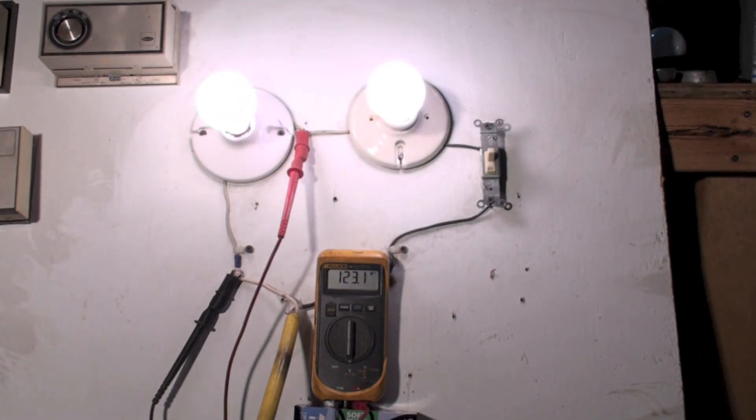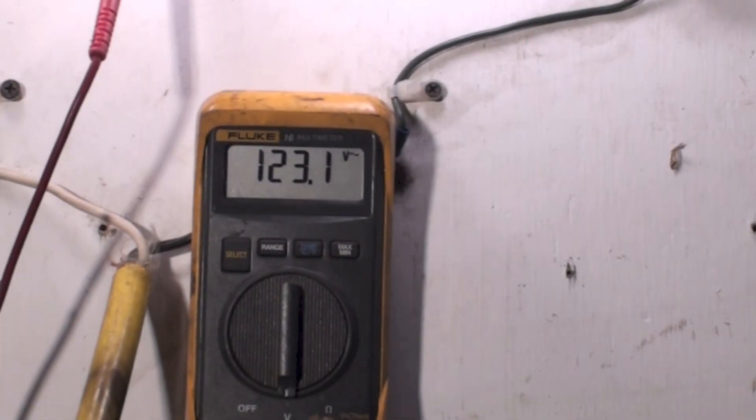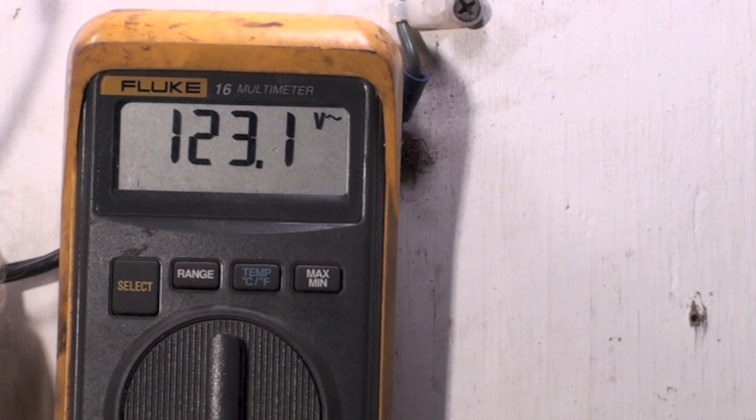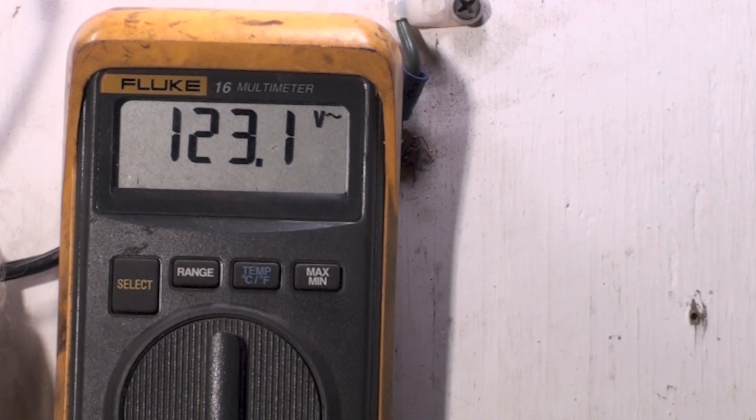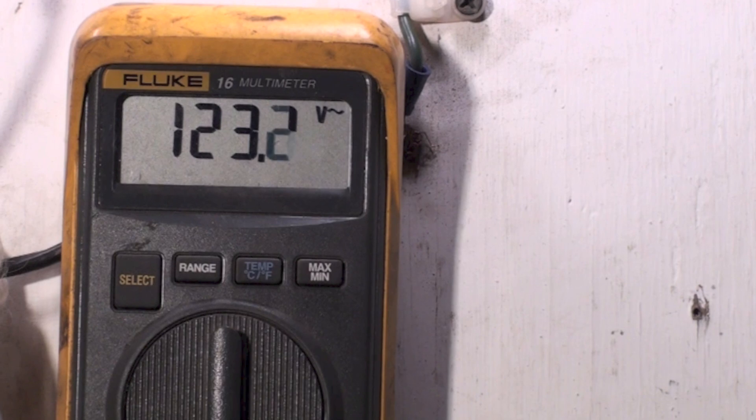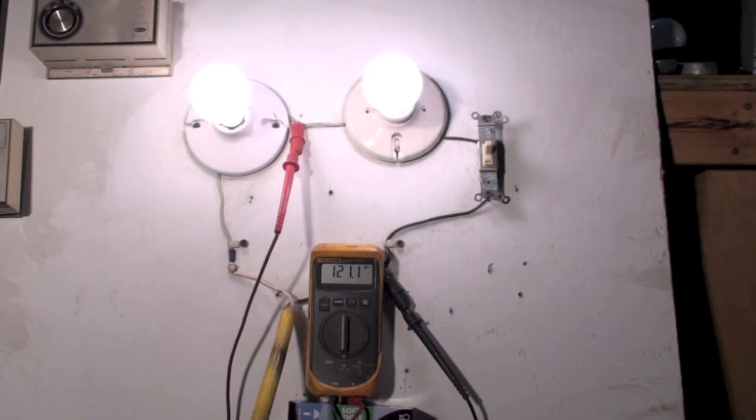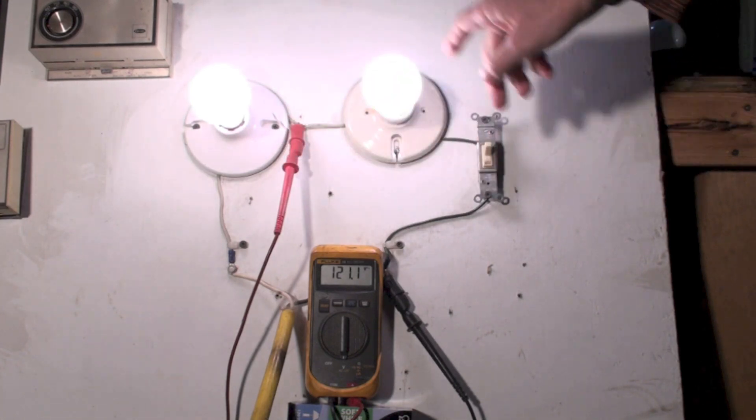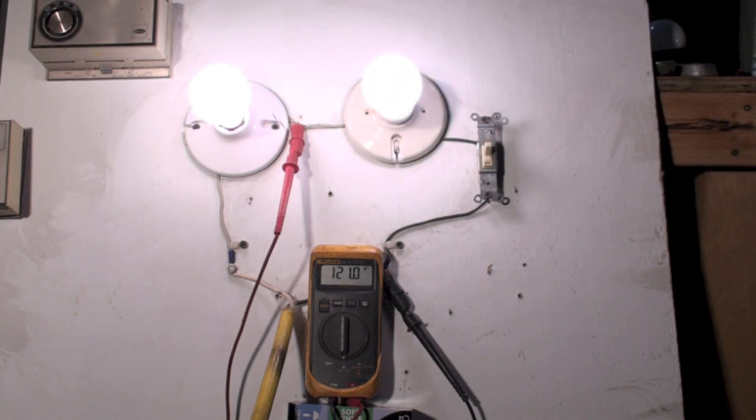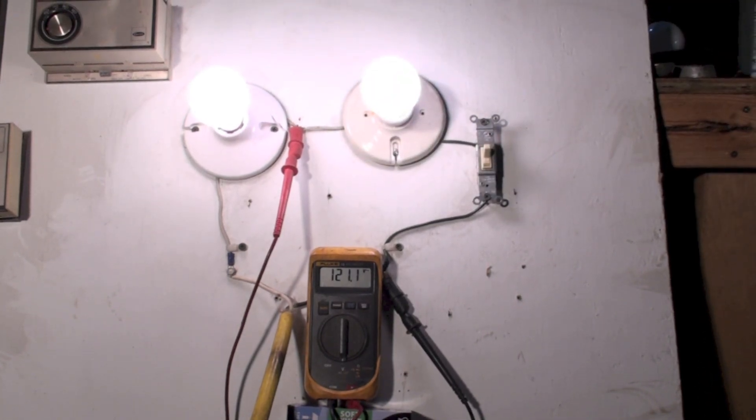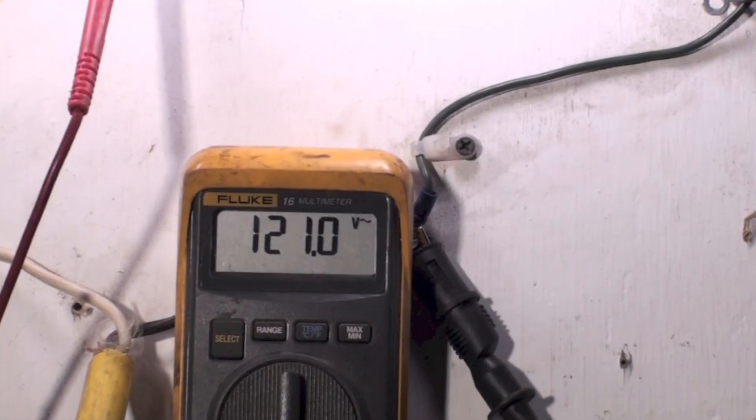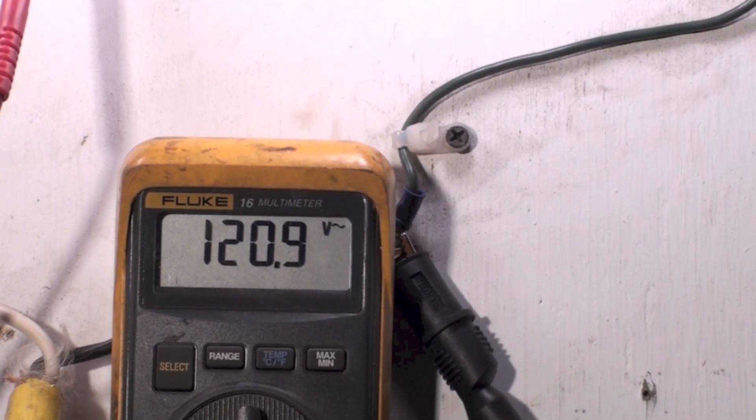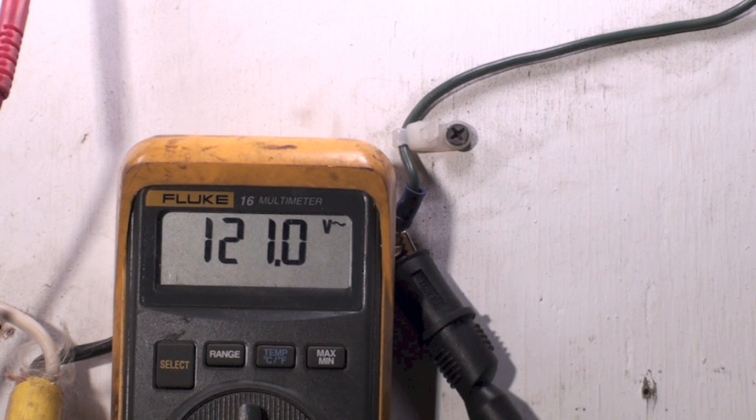You can see that voltage is 123. Let's switch it to the other light. Now if you look, I have one probe here and one probe there, so I'm testing this light. Let's see what our voltage is. It's 121, so we're a couple of volts different because no two loads are actually identical.